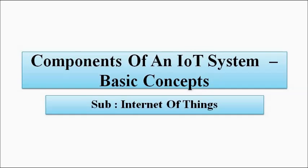Hello friends, welcome to engineering tutorial. We will continue our discussion related to Internet of Things. So far we have discussed about various key technologies involved in the implementation of IoT: wireless sensor networks, cloud computing, big data, embedded systems. In this video we are going to discuss about the various components of an IoT system and how they combine to bring the system together — in a broad sense, what components are involved in an IoT system.